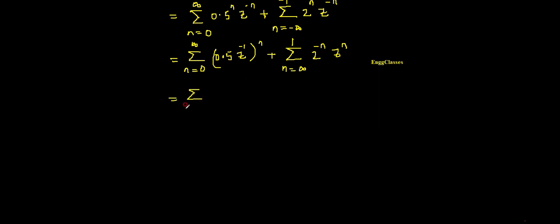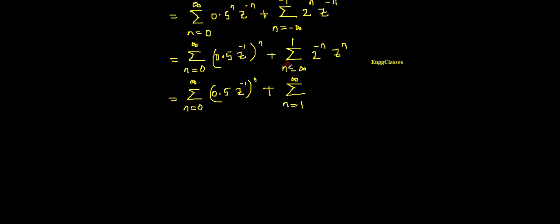Simplifying further, the first term remains as: summation from n equal to zero to infinity of (0.5 times z to the power minus 1) whole thing to the power n. Plus the second term: summation from n equal to one to infinity of (2 to the power minus 1 times z) whole thing to the power n. So this is what I have.